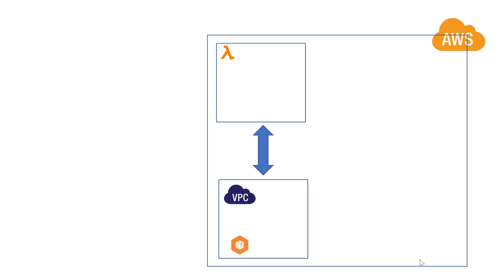To connect your Lambda to your VPC, you have to make a few changes to your settings. In this particular section, we'll talk about how you can connect your Lambda to an EC2 machine via the private IP address of that EC2 machine. Let's see how we can do this.